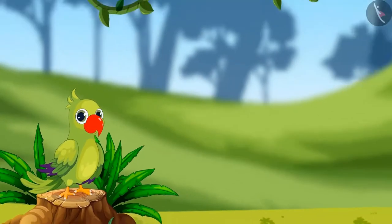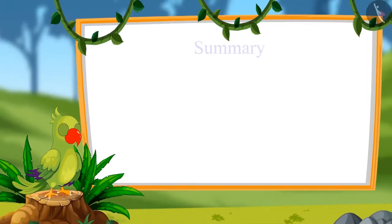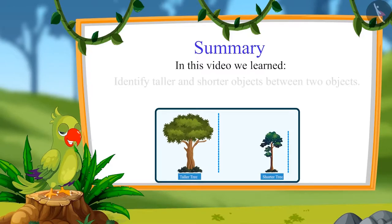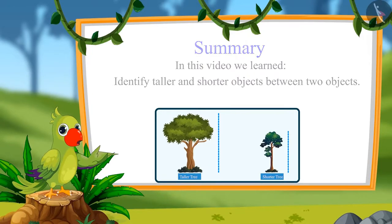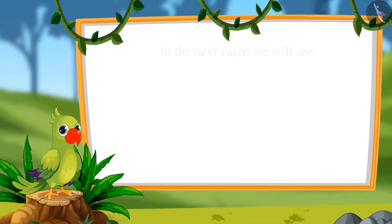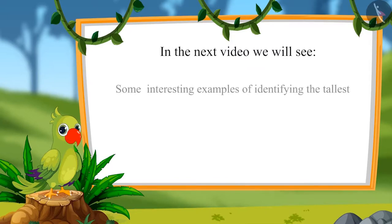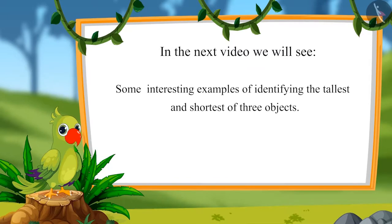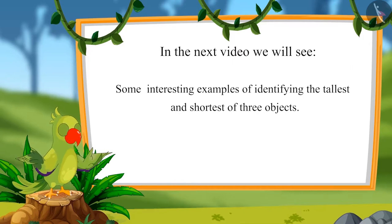That's all for today, children. In this video we learned to identify taller and shorter objects between two objects. In the next video we will see some interesting examples of identifying the tallest and shortest — the tallest of three objects. Till then, bye children!